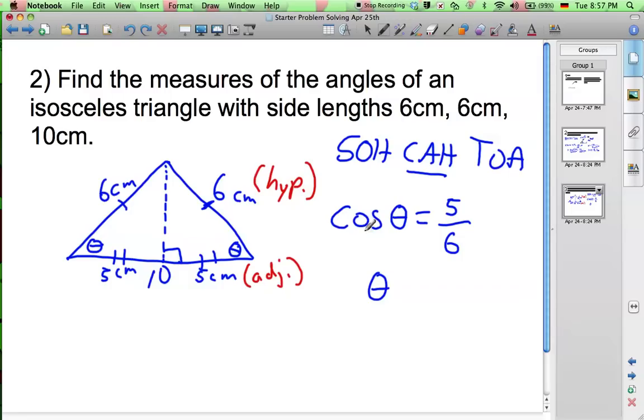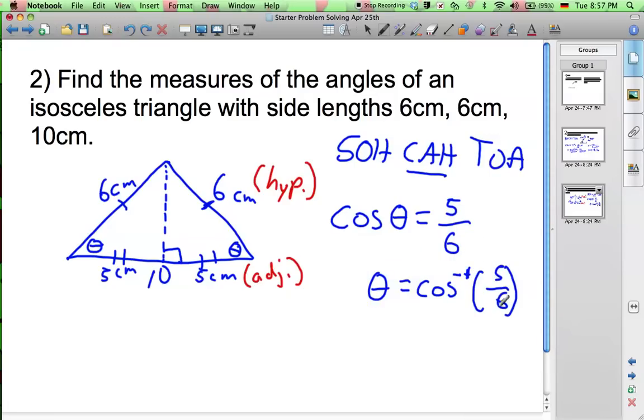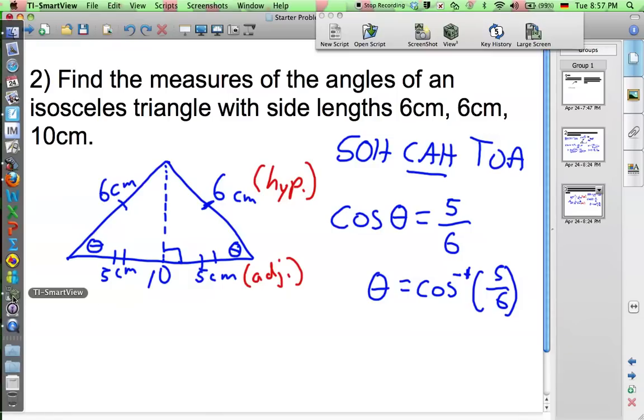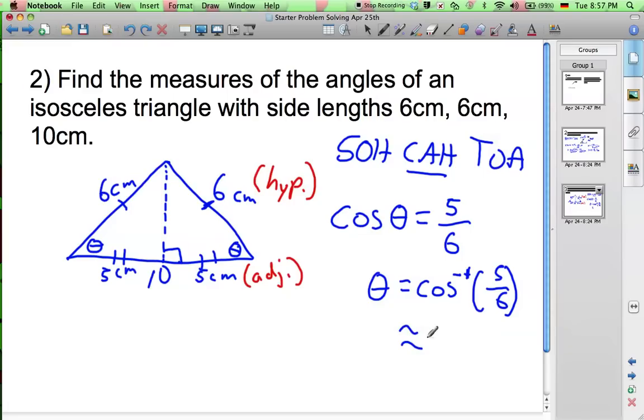In order to find theta here, you do the opposite of cosine, which is inverse cosine. So we're going to do inverse cosine of 5 out of 6. We're going to need our calculator for that. I've already done it on the calculator here. We have 33.56. Let's round it off to 33.56 to make it nice and accurate.